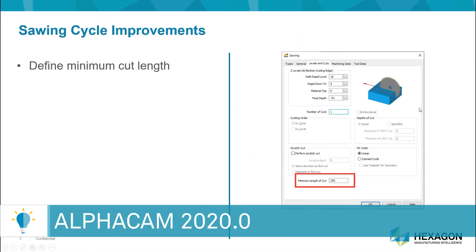Number one, we have defined minimum cut lengths. This will allow you to filter out cuts that don't have a length which is meaningful for your part. In other words, if the saw only comes down and makes a simple one millimeter cut or an eighth of an inch, now you can filter that out so that you can deal with that little portion of your part separately if you choose to do so.